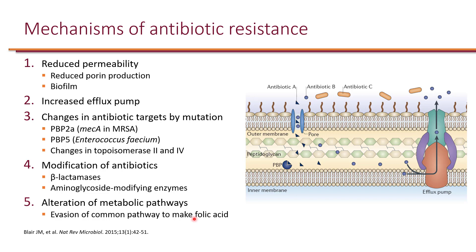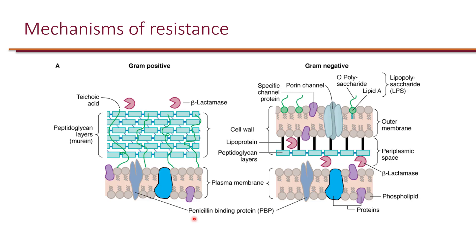There are other mechanisms of resistance, but these are the common ones we will focus on. Comparing gram-positive and gram-negative bacteria: gram-positive bacteria have only the inner plasma membrane with no outer membrane, and on top of the membrane is the peptidoglycan layer. With gram-negatives, there are two membranes — inner and outer — with a small layer of peptidoglycan between them.